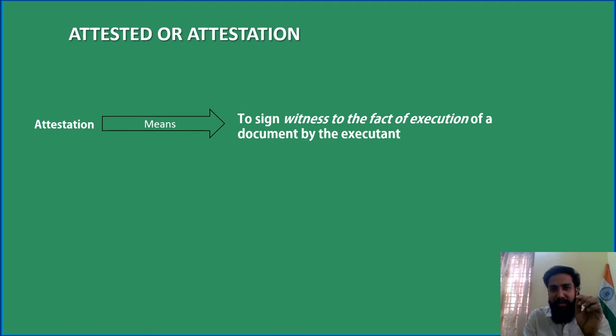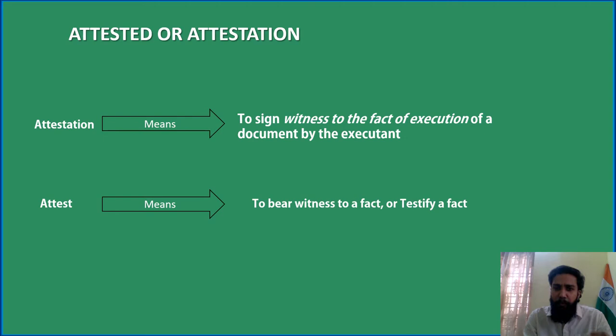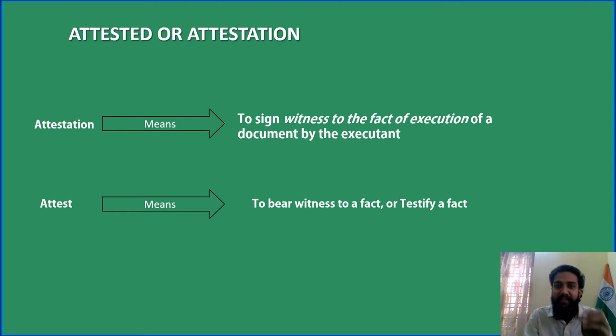And who is the Executant? The Executant is the current owner of the property — he is the Executant of that particular transfer. Attest means to bear witness to a fact or testify a fact. If you say Attest, you are actually bearing witness to the entire execution process. It means that the owner has put his sign on that stamp paper and the entire process is done in a fair manner. You are testifying it — that is what is called bear witness to the fact or testify a fact.